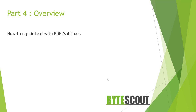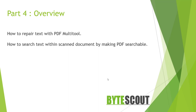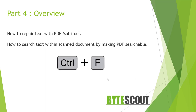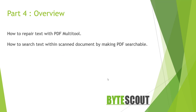PDF multi-tool can even process damaged files. We will explore this feature in a few minutes, and then we will take a look at how to search text within a scanned document by making the PDF searchable. If a PDF file contains normal text, you can search the content by pressing Ctrl+F. But if a PDF contains a scanned document, you can't use Ctrl+F to find the content. We will see how PDF multi-tool can help us in that scenario.